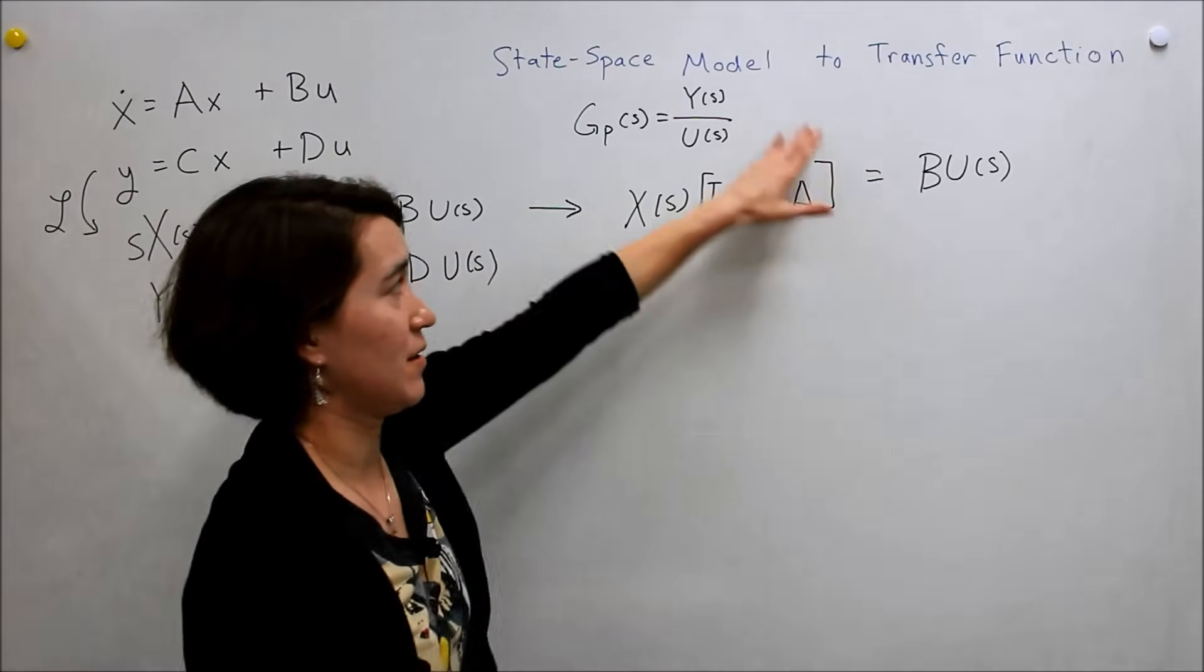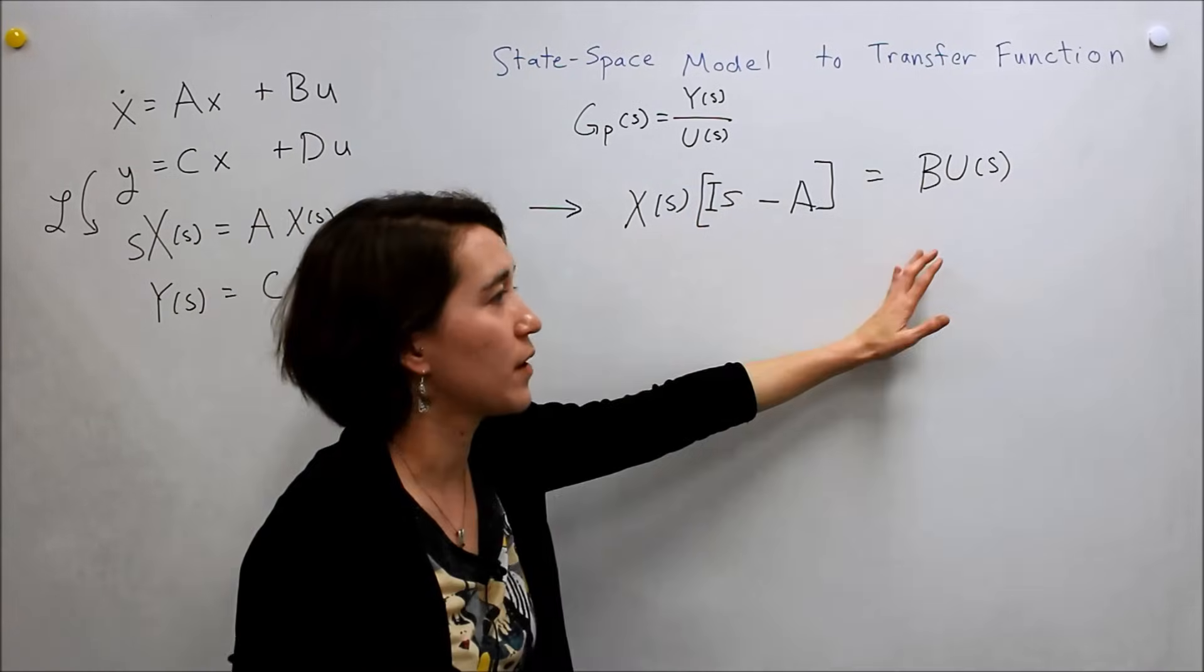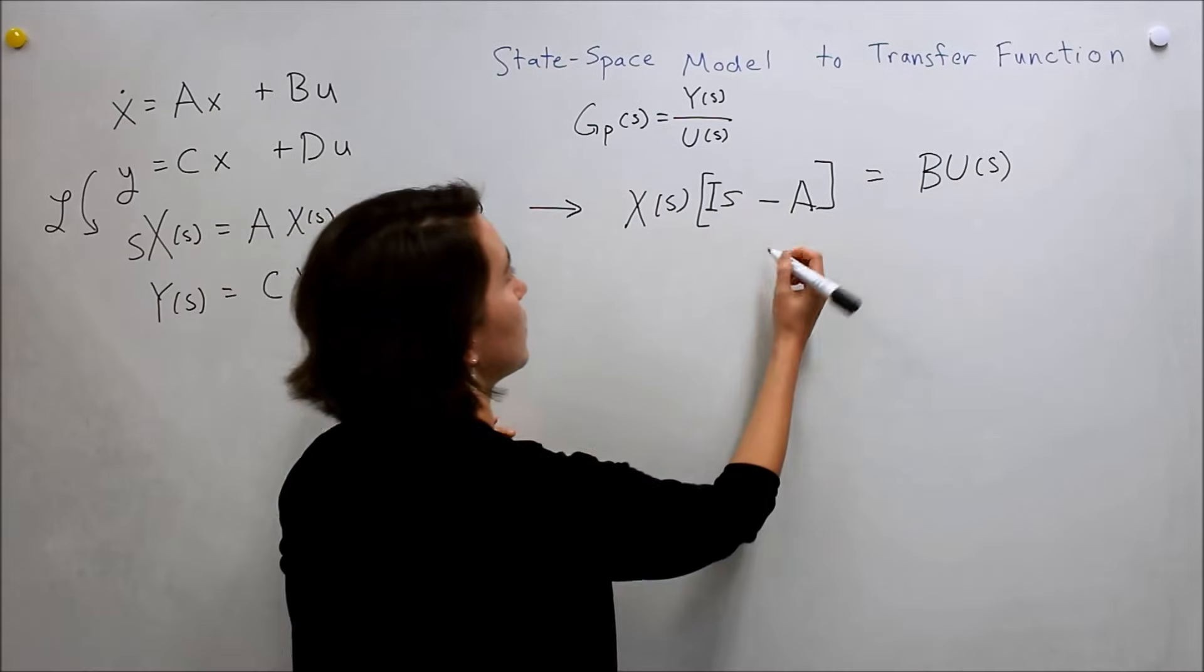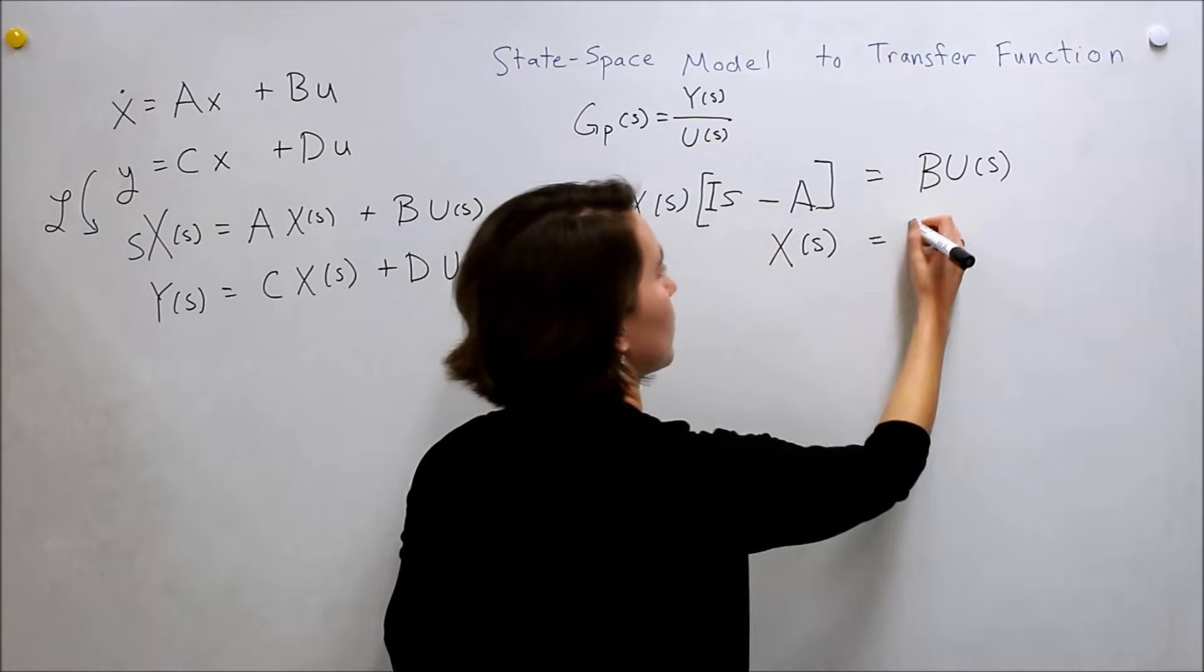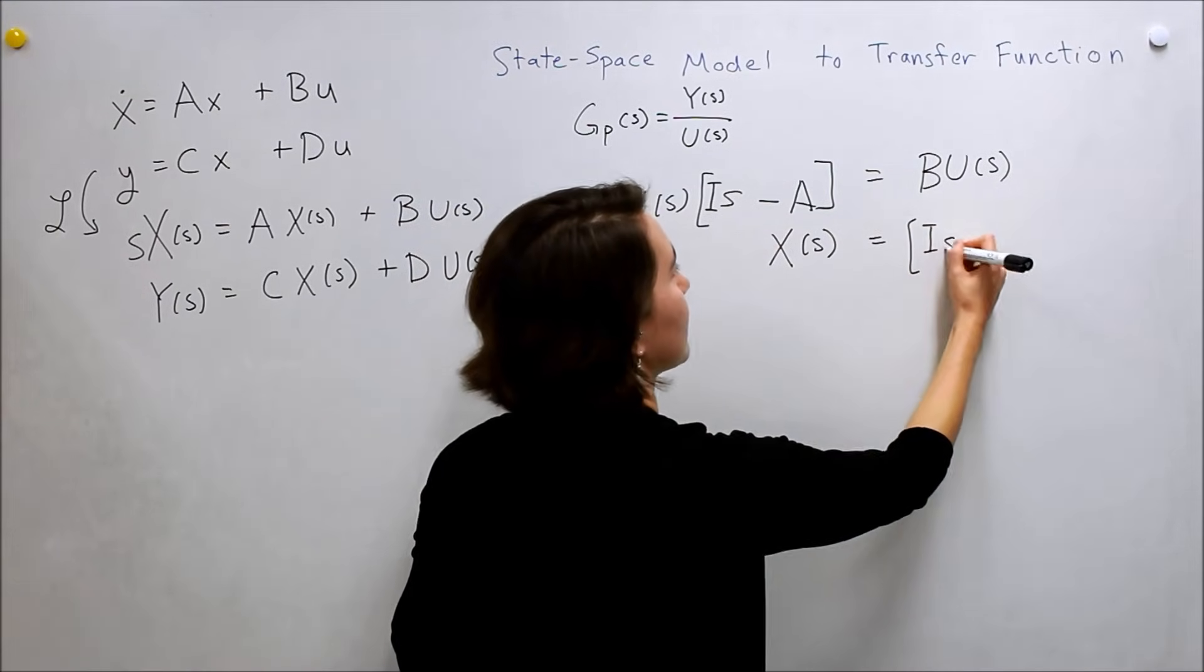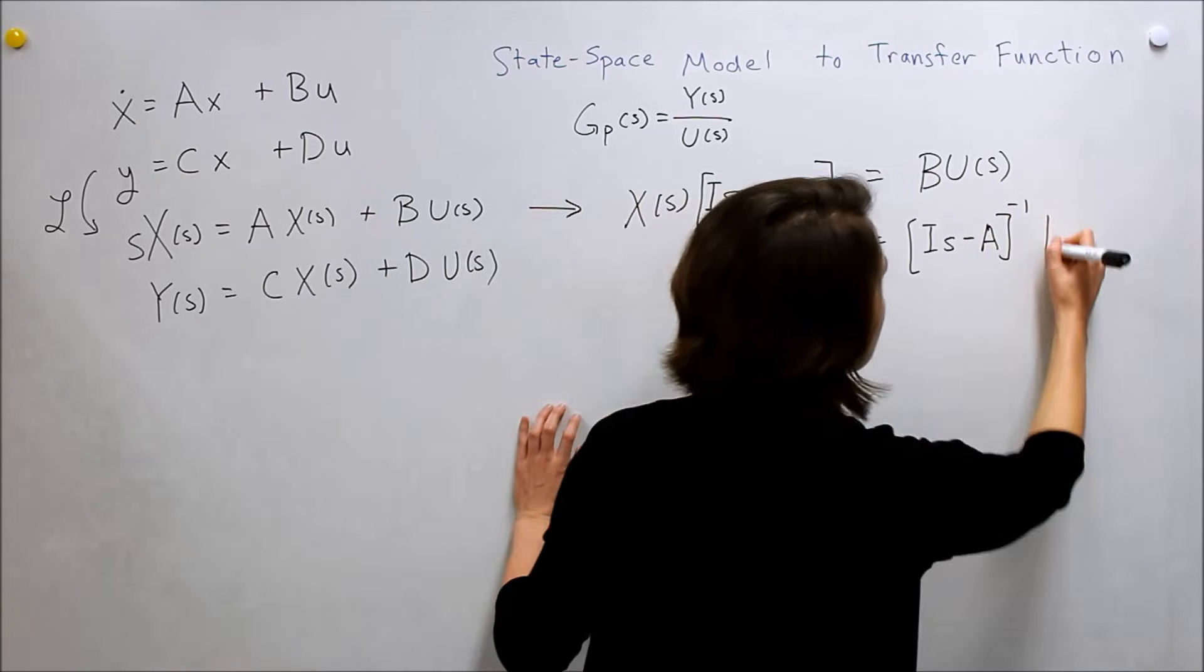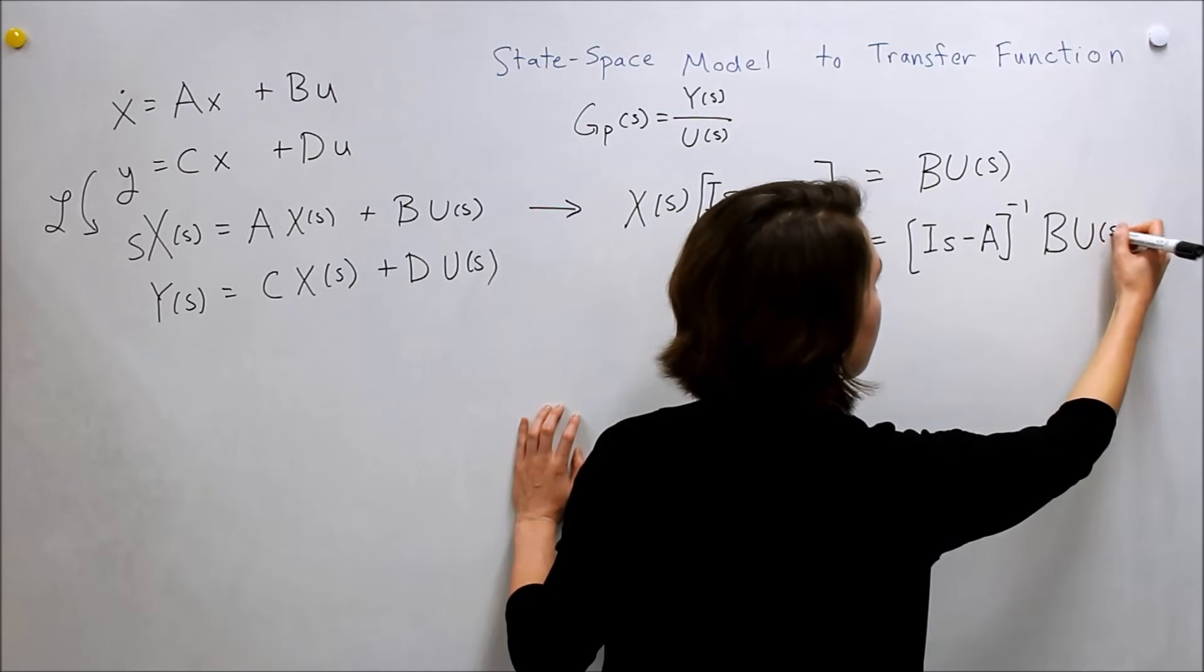And this is a matrix, because we have to have it in a matrix form. So we need to move it over. So we need to take the inverse and apply it to both sides. So to do this, we end up with the inverse of this. So is minus a inverse, negative one, then times the b and the u.